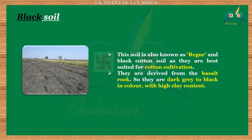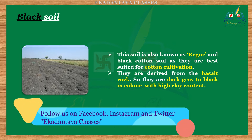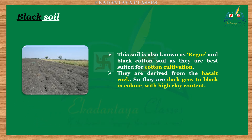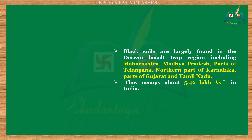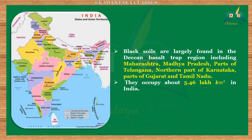Two: black soils. This soil is also known as regur and black cotton soil, as they are best suited for cotton cultivation. They are derived from basalt rock, so they are dark gray to black in color with high clay content. They are highly retentive of moisture and extremely compact. They are best suited for the cultivation of cotton, sugarcane, jowar, maize, pulses, wheat, and chilies. Black soils are largely found in the Deccan basalt trap region, including Maharashtra, Madhya Pradesh, parts of Telangana, northern Karnataka, parts of Gujarat, and Tamil Nadu.